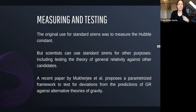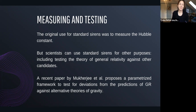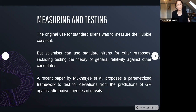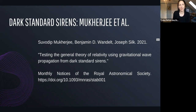The original use for standard sirens was to measure the Hubble constant, but once you have a standard siren, you can use it for other purposes — including, as now proposed, testing the theory of general relativity against other candidates. This is where I cite the recent paper by Mukherjee et al., which proposes a parametrized framework to test for deviations from the predictions of GR against alternative theories of gravity using standard sirens. The paper is 'Testing the General Theory of Relativity Using Gravitational Wave Propagation from Dark Standard Sirens,' published in Monthly Notices of the Royal Astronomical Society in 2021.